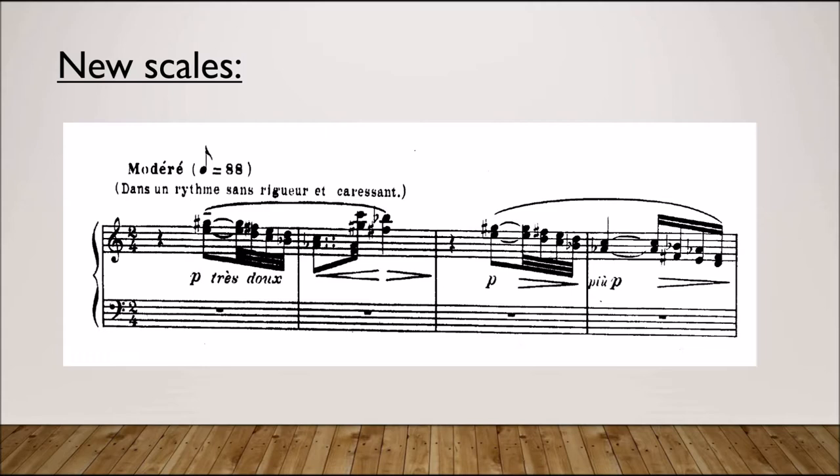Let's look at this example from Voile, one of his piano preludes. Let's take a note count. Starting from the beginning, it looks like there's an E, G-sharp, D, F-sharp, C, and B-flat. And if we list those in alphabetical order, starting with E, we get E, F-sharp, G-sharp, B-flat, C, and D.